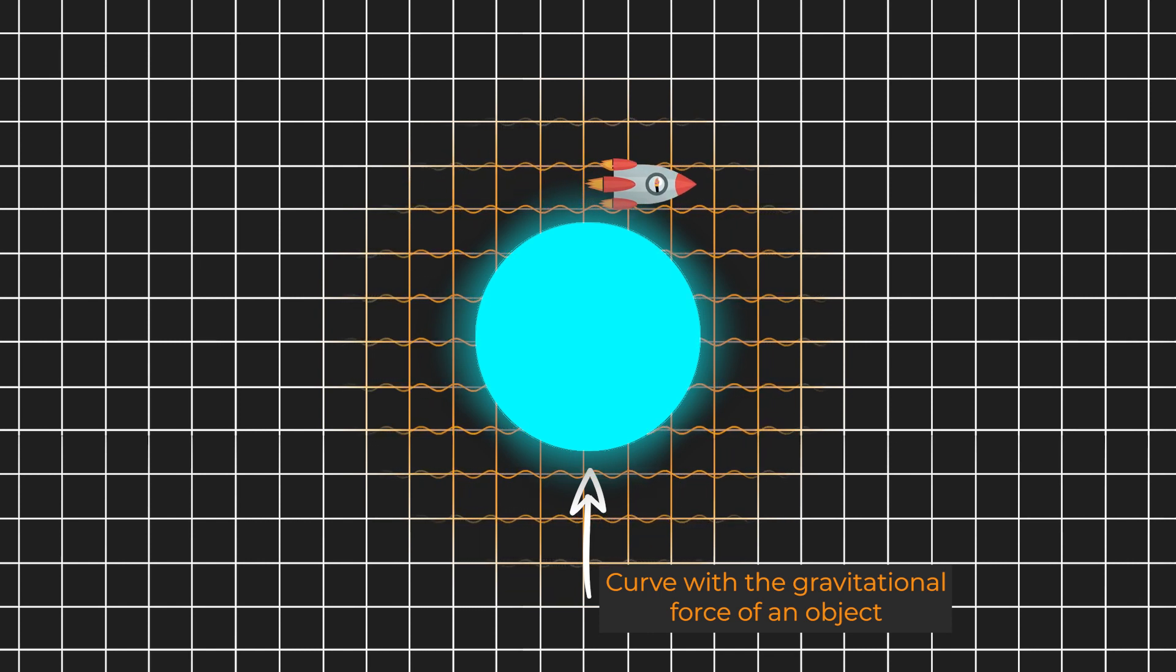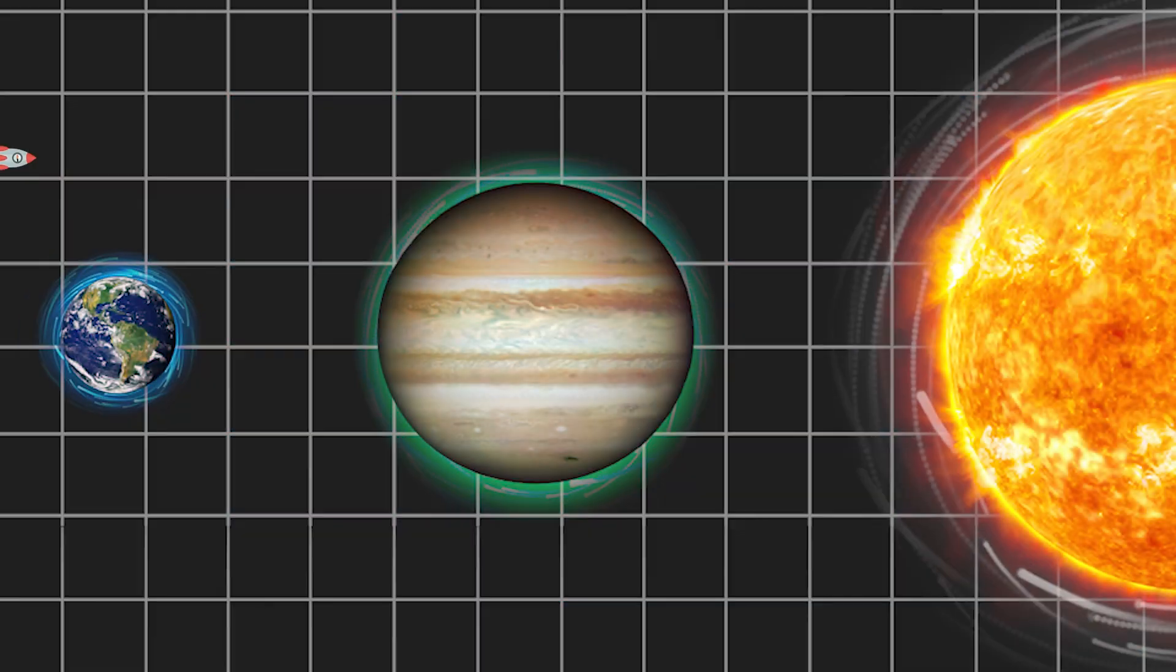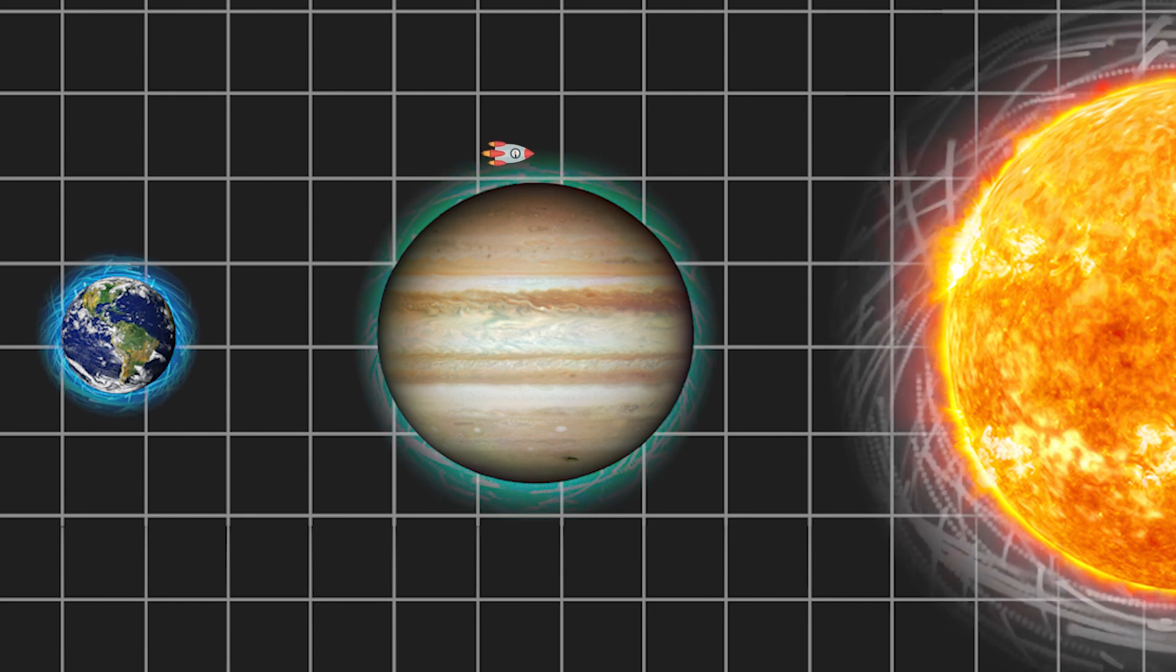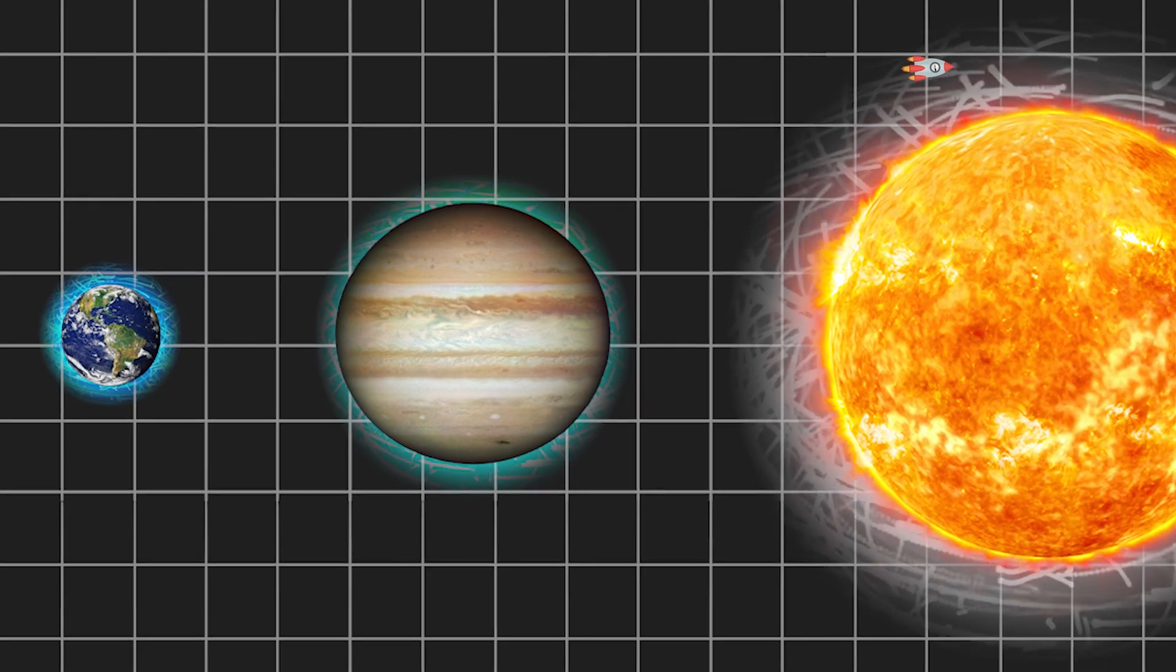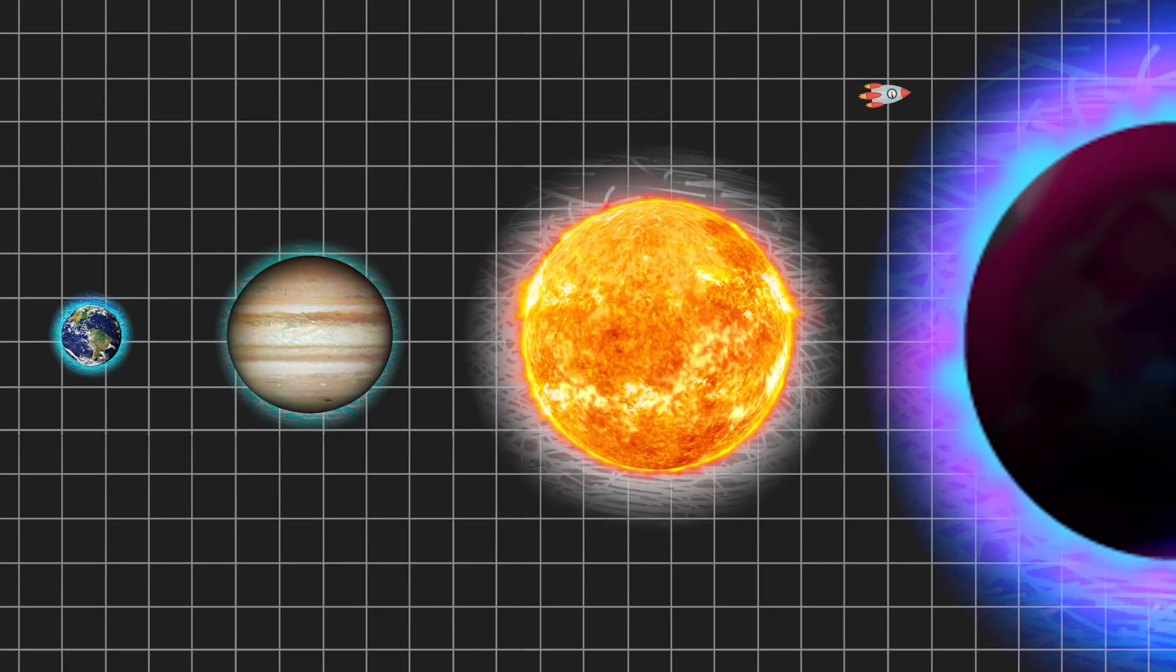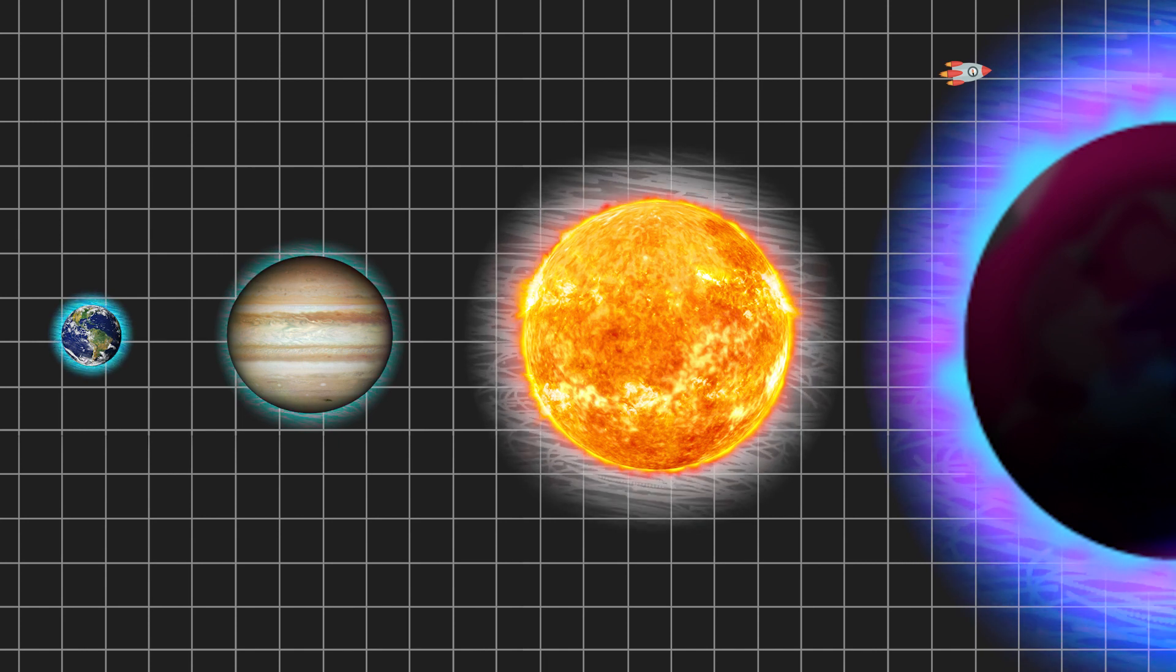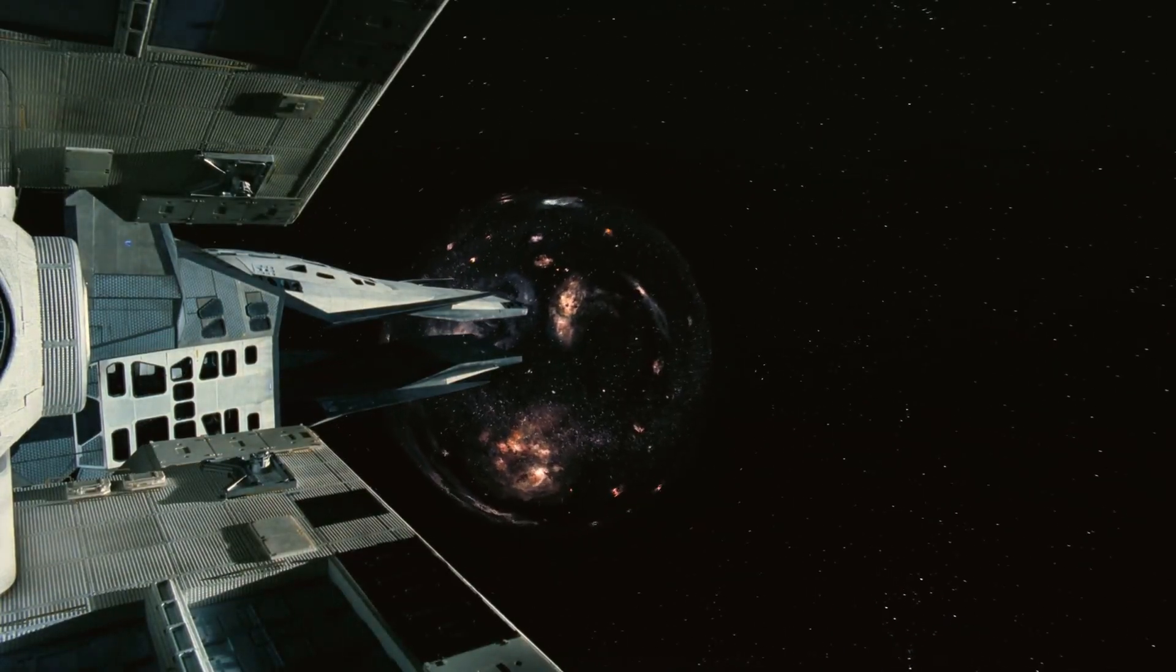The closer you get to an object with a high gravitational force, the more would you feel time slow down. This basically means that if you want to travel through time in the future, then spend some time near Jupiter, or around the Sun, or near an object that has even more gravitational force, like a black hole. If you spend some time near a black hole, time would pass you by slowly. This is the same concept shown in the film Interstellar.